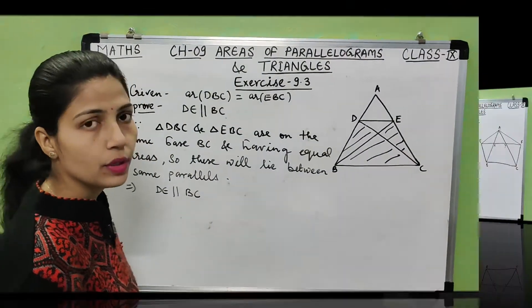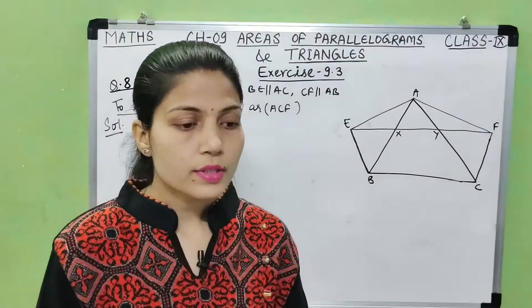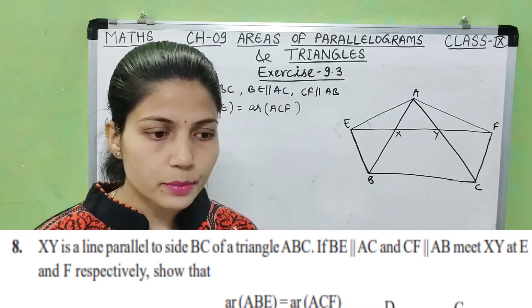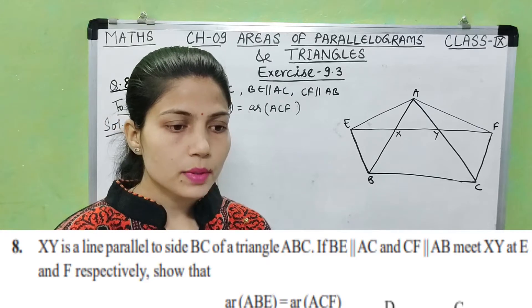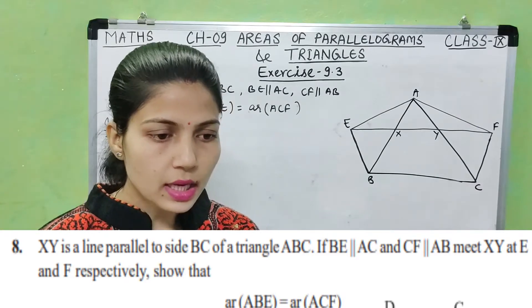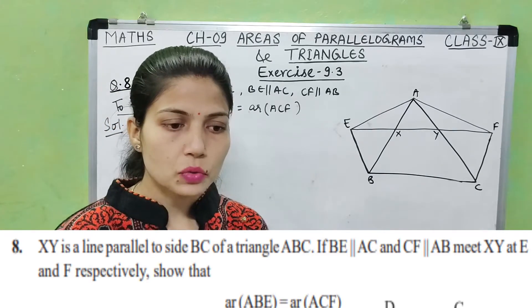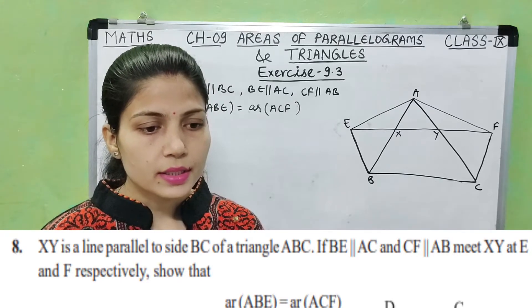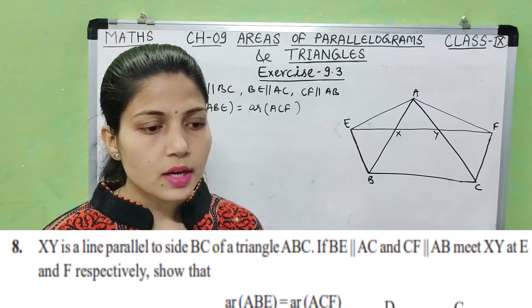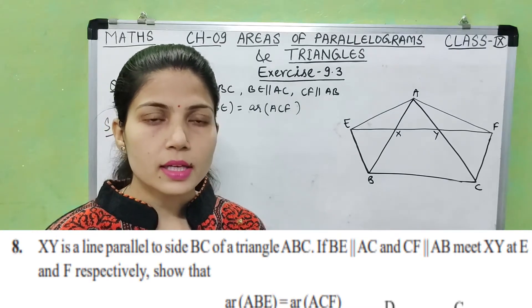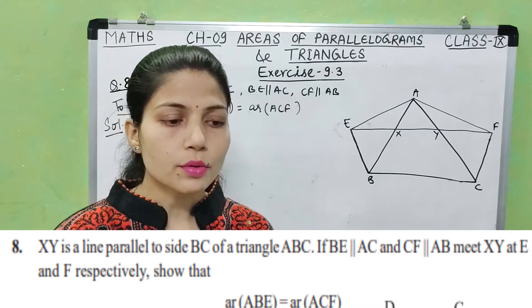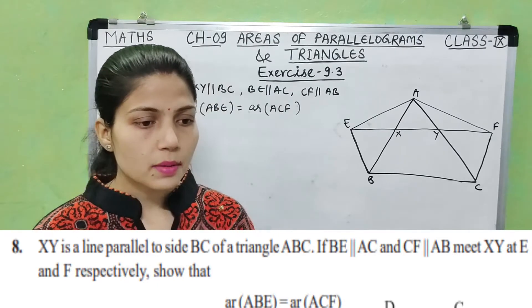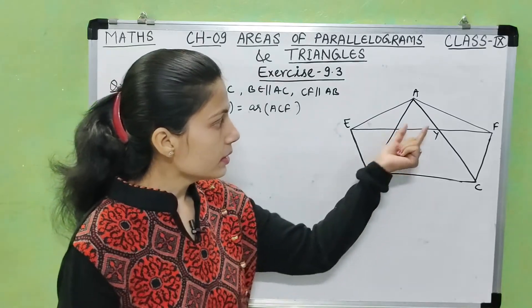Now let's move to question number 8. XY is a line parallel to side BC of triangle ABC. BE is parallel to AC and CF is parallel to AB, meeting XY at E and F respectively. Show that area of triangle ABE is equal to area of triangle ACF.